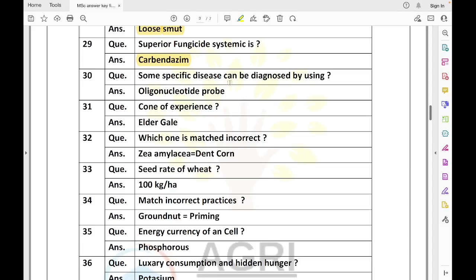Some specific disease can be diagnosed by using - this is a genetics question. The exact question language wasn't clear. Genetics was very hard with atypical questions. If someone has any disease, how do you diagnose it? The option was something like oligonucleotide probe, which is a probe made of 2 to 5 bases that can match with a specific gene sequence.